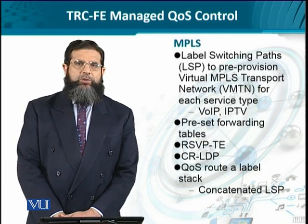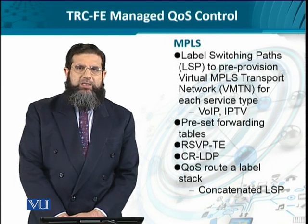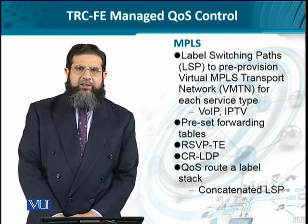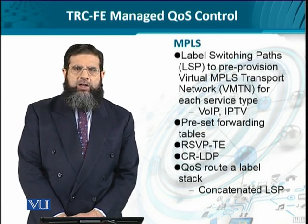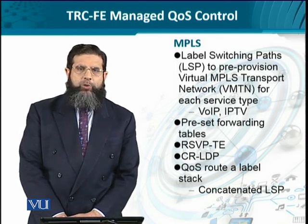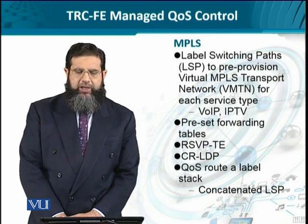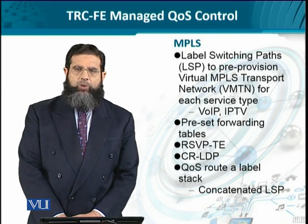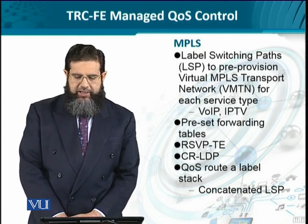Since we are talking about NGN networks with very high speed requirements, multi-protocol label switching (MPLS) makes the processing of IP packets very fast. It does so by introducing a header known as the SHIM header between layer 2 and layer 3, known as a label. This label is used in processing the IP packet as it moves from one router to another within the MPLS domain. The paths in an MPLS domain are known as label switched paths, which are pre-provisioned for a certain flow — for instance, a VoIP flow or IPTV flow.